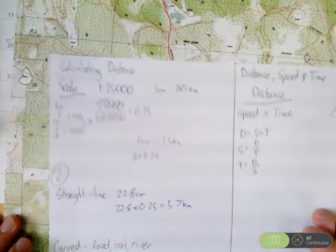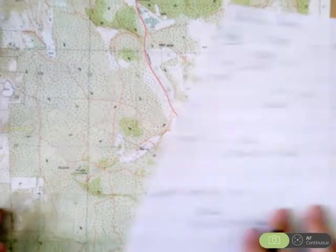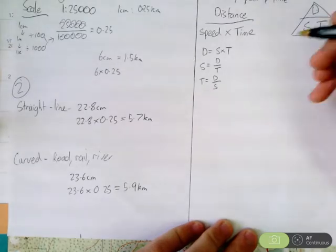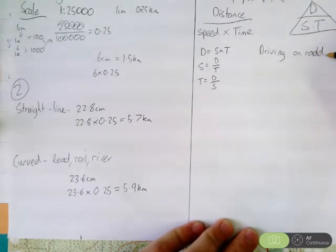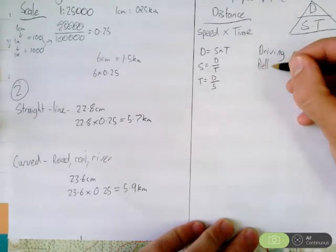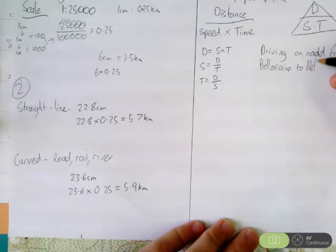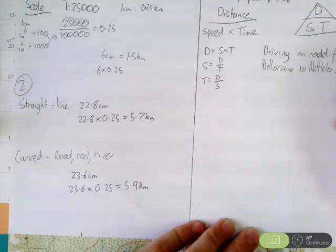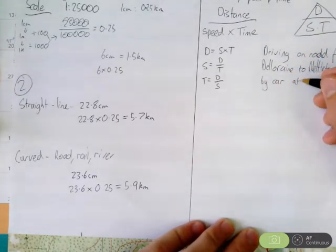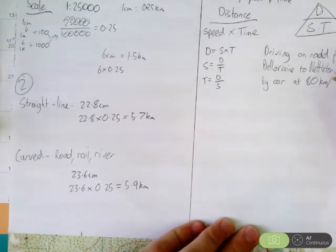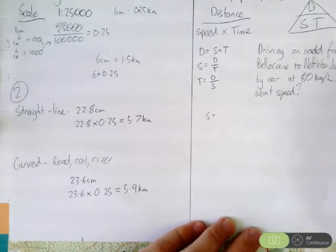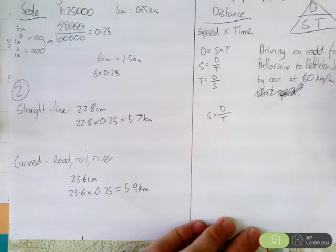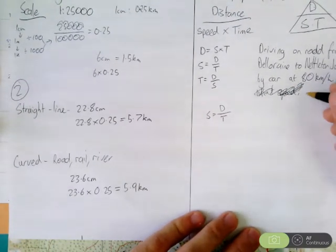Now, a couple of examples. Say, for example, you're driving from Deloraine down to this Nettleton Junction. So, you're driving on the road, from Deloraine to Nettleton Junction, by a car, at 80 km an hour. You might get a question like this. What speed were you travelling? So we're trying to figure out, we've got the speed there. Obviously, sorry about that. And by car, at 80 km, so how long would it take?